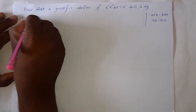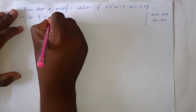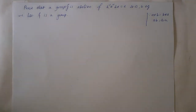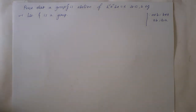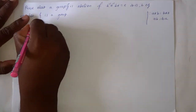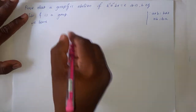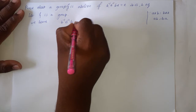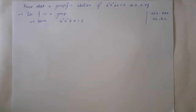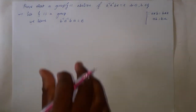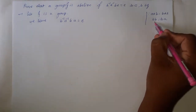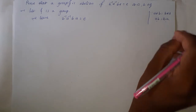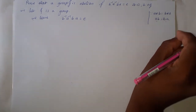Let G be a group. The given condition is B inverse A inverse into B into A is equal to E. By using this condition we need to prove that AB is equal to BA. If we prove this condition then it is enough to say that G is an abelian group.